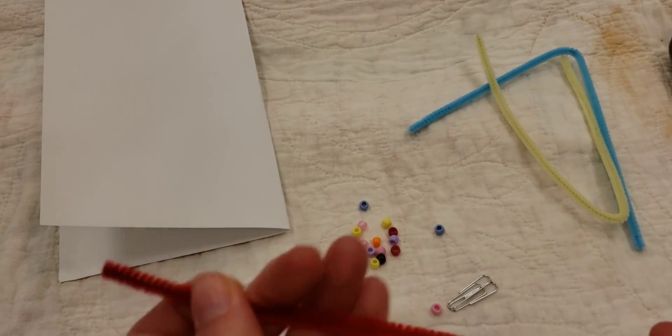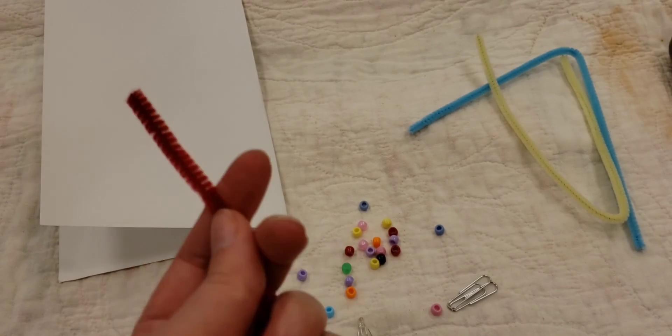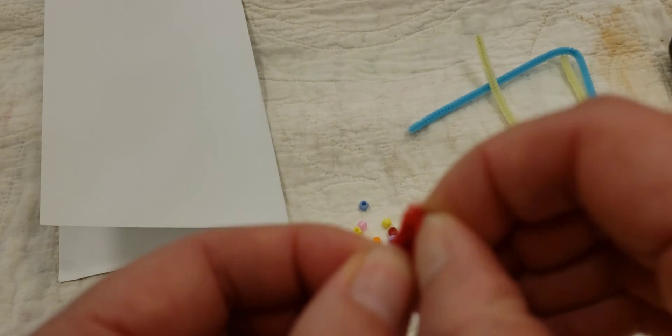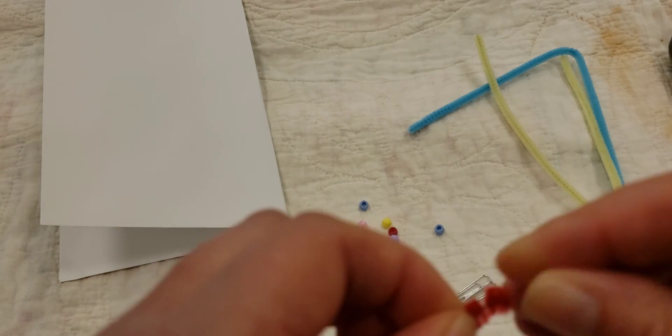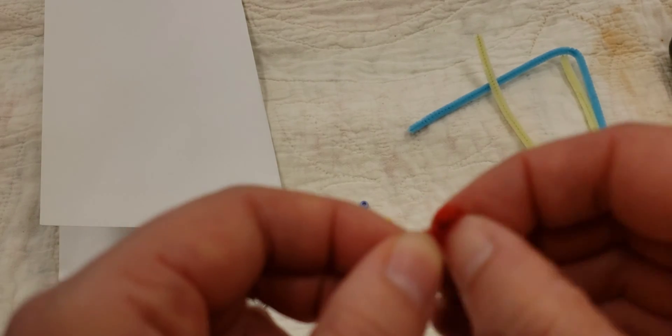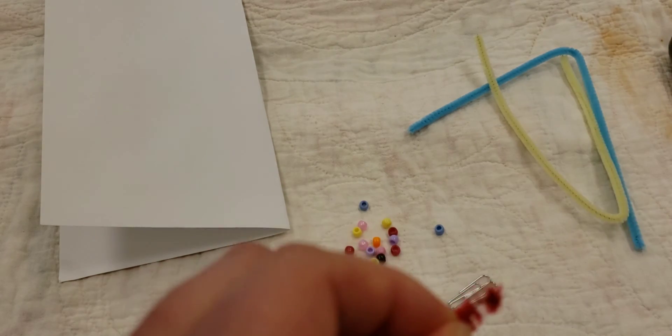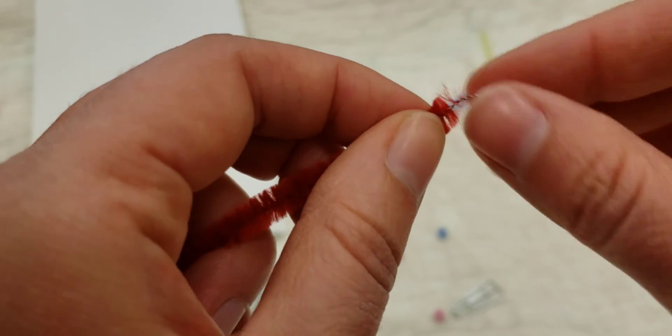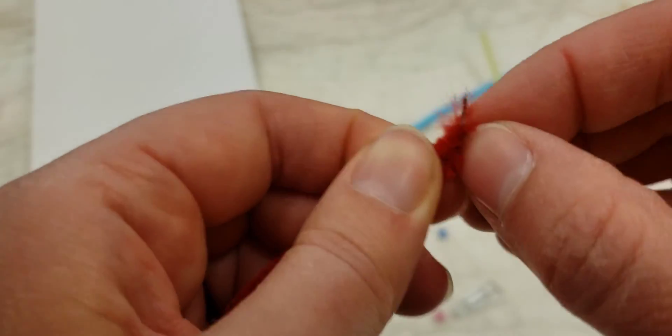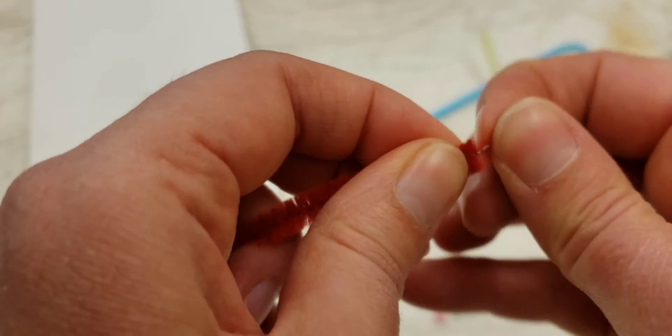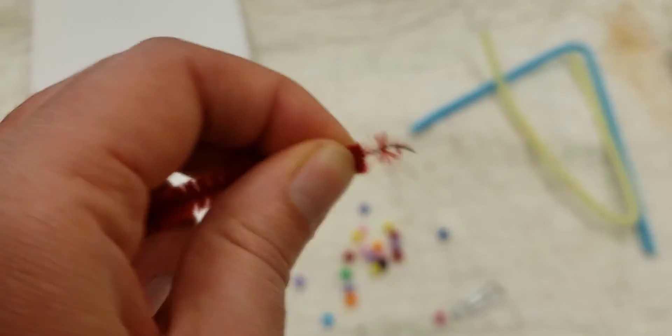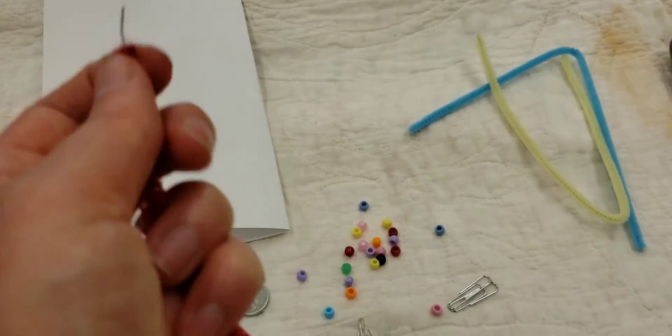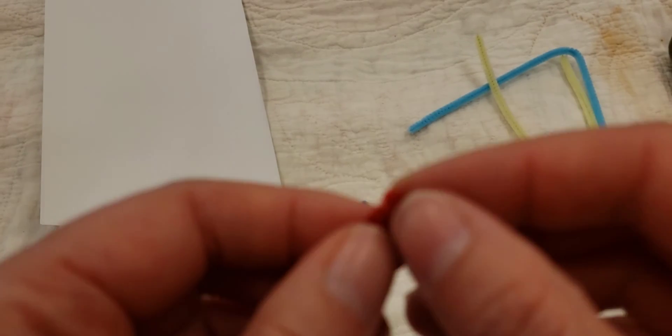You are then going to take two of your pipe cleaners and you are going to strip off the fuzzy bit. There we go. Kind of just have to really grab it with your fingernail and yank it off. Okay that's one side stripped. Do the next side.